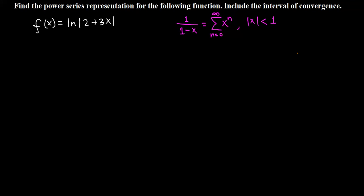Find the power series representation for the following function and also find the interval of convergence. The function is natural log of absolute value of 2 plus 3x. We know that the power series for 1 over 1 minus x is given by the geometric series, which is valid when the absolute value of the common ratio is less than 1.